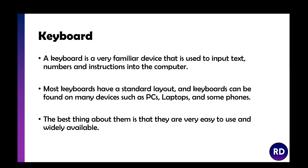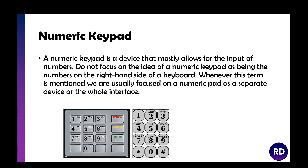The best things about keyboards are that they're very easy to use, widely available, and cheap. A variation is a numeric keypad, which is a device that primarily allows you to input numbers. When we talk about a numeric keypad, we mean something like an ATM or a coded lock for a door — it's just got numbers and a few basic commands. An ATM is probably the best example.